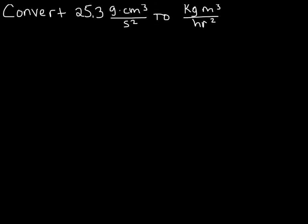Let's do an example of converting compound units. A compound unit is just a unit like this one here — we can see grams times centimeters cubed over seconds squared. It involves more than one type of unit.